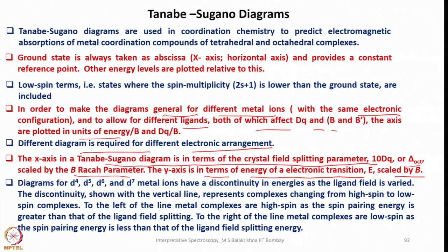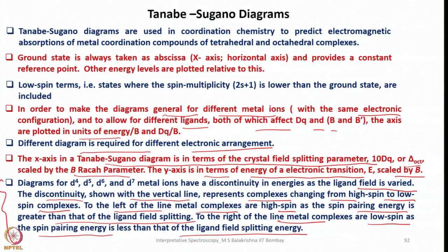Diagrams for d4, d5, d6, d7 metal ions have a discontinuity in energies as the ligand field is varied. The discontinuity shown with a vertical line represents complexes changing from high spin to low spin. To the left of the line, metal complexes are high spin as the spin pairing energy is greater than the ligand field splitting. To the right, metal complexes are low spin as the spin pairing energy is less than the ligand field energy. You can take Tanabe-Sugano diagrams for each electronic configuration, read this paragraph, and observe the differences.